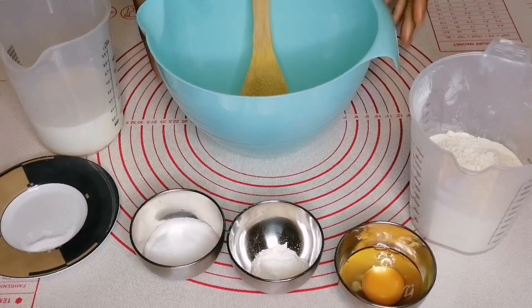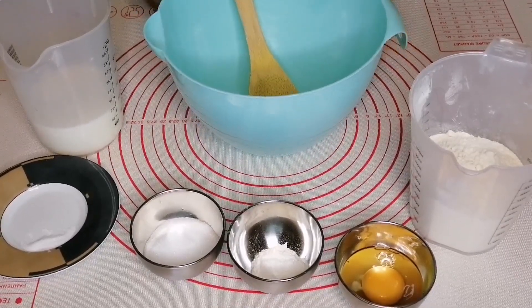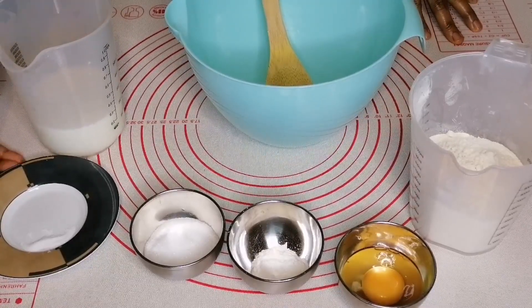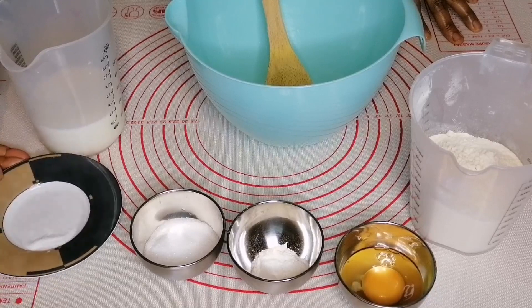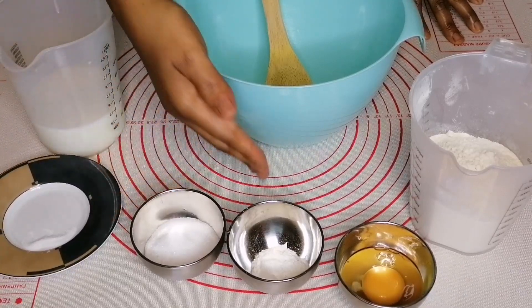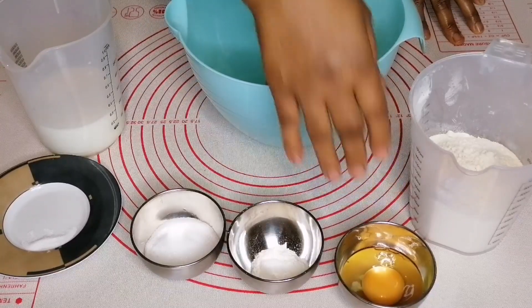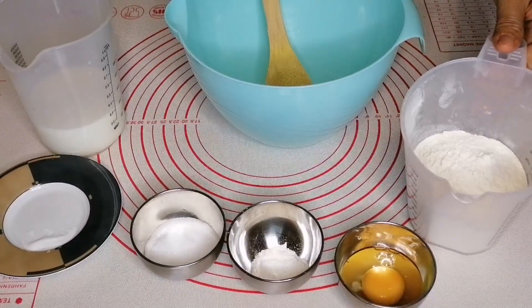Let us prepare the batter. We will be needing 300 milliliters of milk, half a teaspoon of salt, three tablespoons of sugar, two teaspoons of baking powder, one whole egg, and 300 grams of flour.